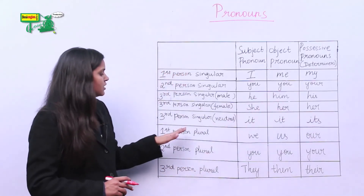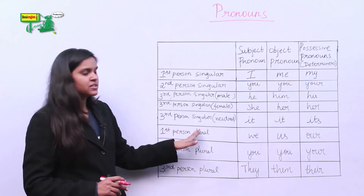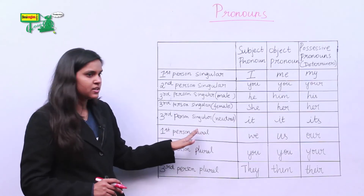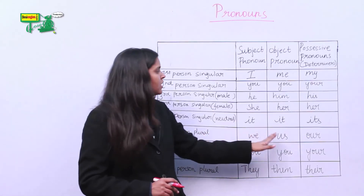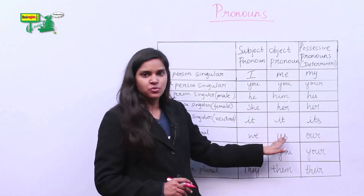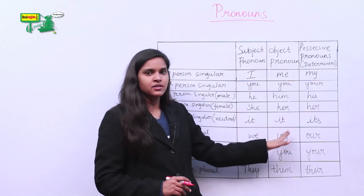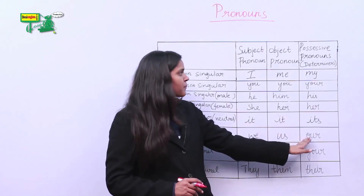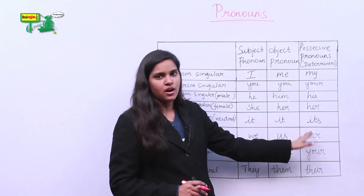The subject pronoun of first person plural is we, the object pronoun is us, and the possessive pronoun is our.